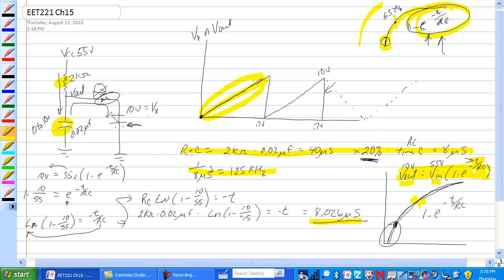So let's start out. We got 10 volts is equal to minus 55 volts times 1 minus e to the minus t over RC.